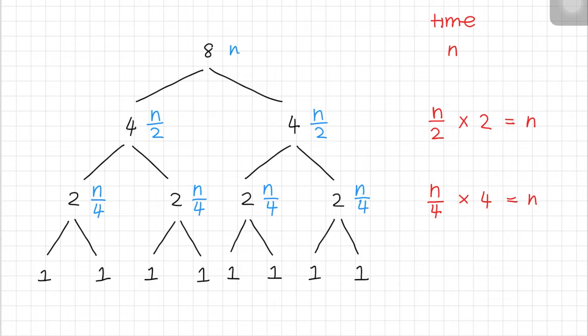For the next iteration, we basically do n over 4 divided by 2, which is n over 8, and a total of 8 arrays. So the time complexity for this level is also n. Now, we know that the time complexity for each level is n, but how do we know how many times do we have to repeat this?